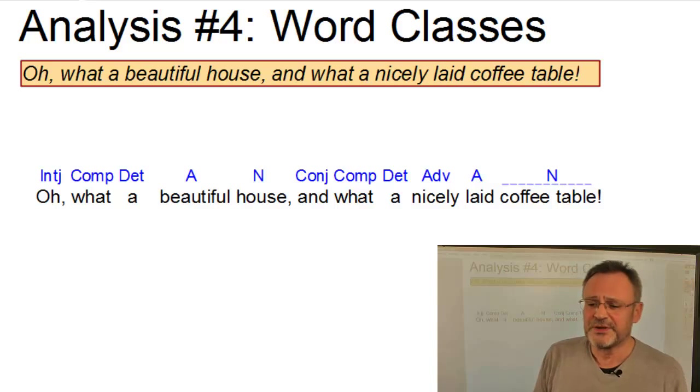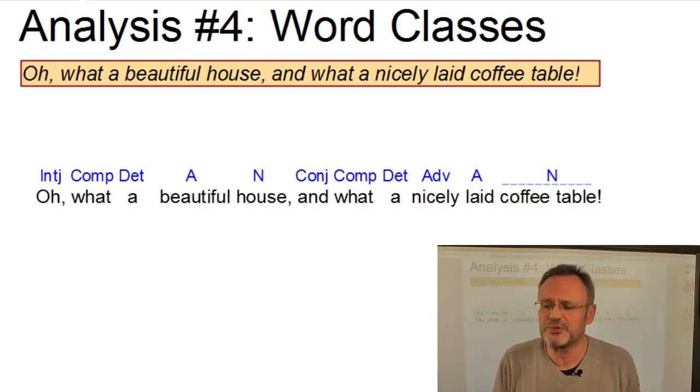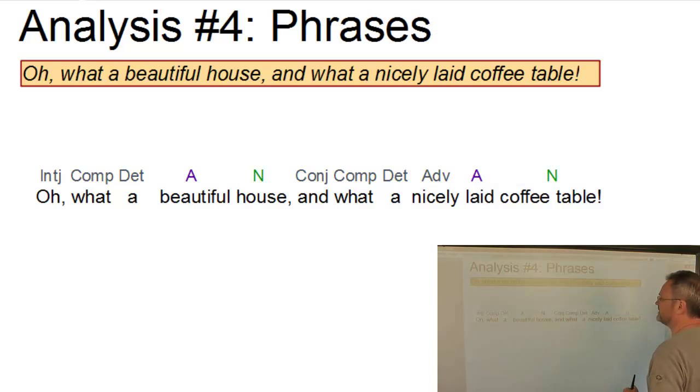Let us now group these simple categories into constituents and let's perform a phrasal analysis. As usual, you see all those open class categories that will eventually occur as heads of their phrases are marked in special colors. Let us work out the phrasal categories in a hierarchical fashion.